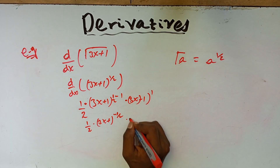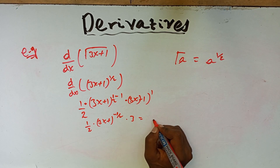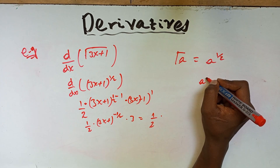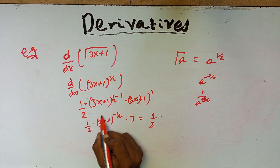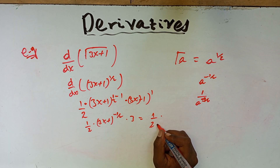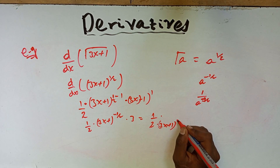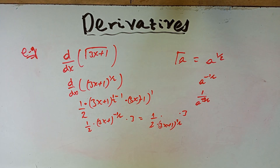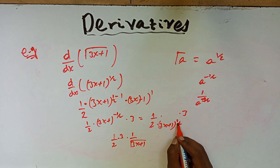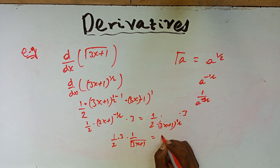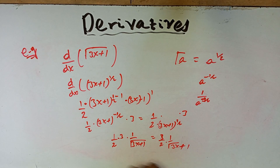The derivative of (3x plus 1) is 3. A to the power of minus one over two equals 1 over the square root of a. So we have one over two times 3 times 1 over the square root of (3x plus 1). The final answer simplifies to 3 over 2 times 1 over radical (3x plus 1).